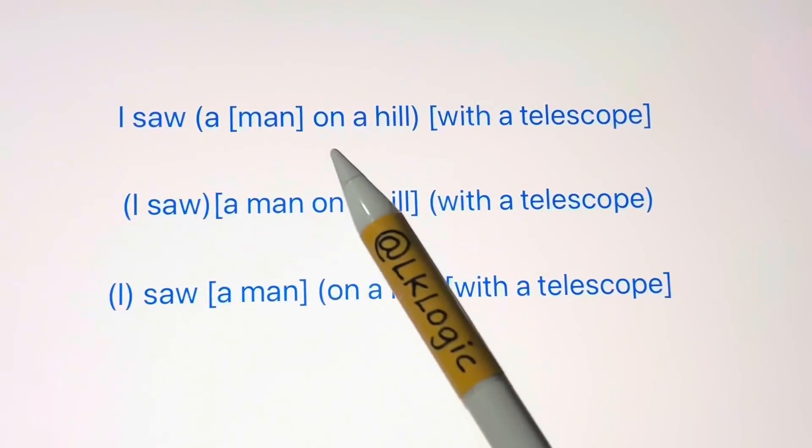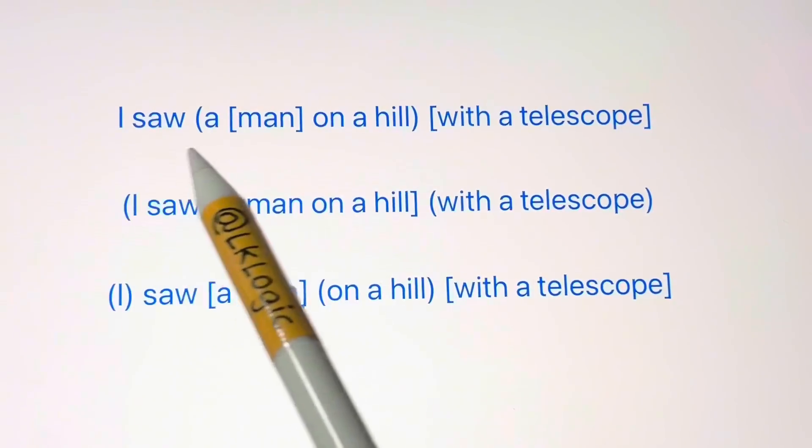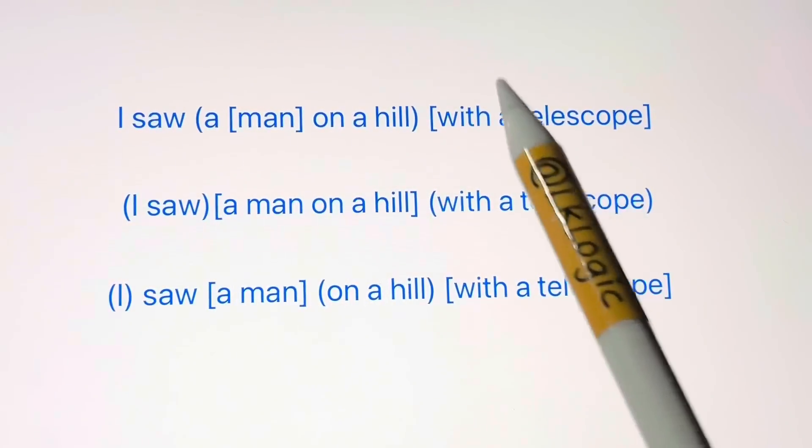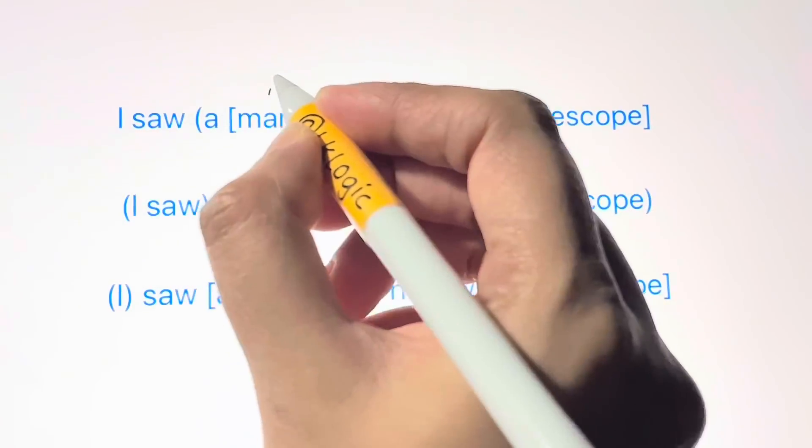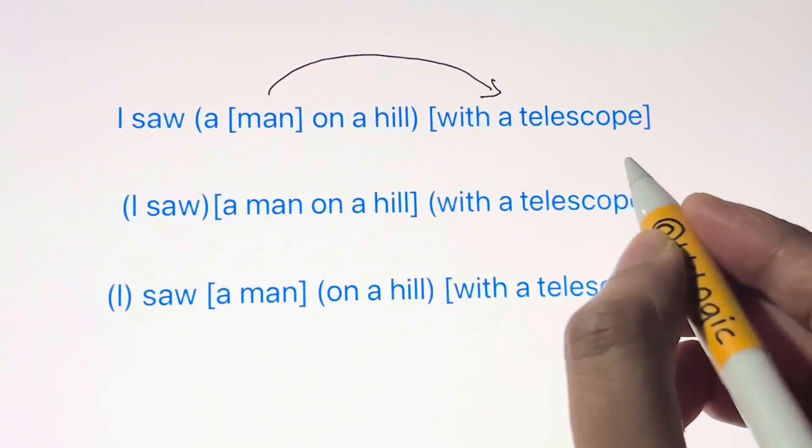For example, we have some English expressions here. I saw a man on a hill with a telescope means there's a man on a hill and I saw that man with the telescope. Next, I saw a man on a hill with a telescope, here I had the telescope and with that I was watching the man on the hill.